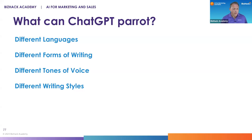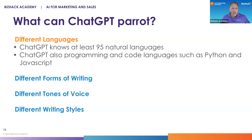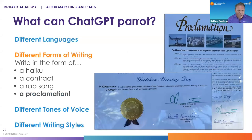So what can a ChatGPT tool parrot? It can parrot different languages, different forms of writing, different tones of voice, and different writing styles. Different languages include Spanish, Creole, Portuguese, and 95 different natural languages — this is actually an emergent property, they didn't set out to train it in language translation. It also knows programming and coding languages such as Python, JavaScript, and HTML.